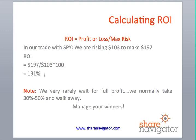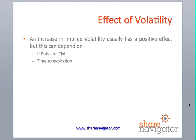We very rarely wait for full profit or let these trades run to expiry. We normally book profit at maybe 25, 30, 40, or up to 50 percent, then walk away. Remember: if you manage your winners, you'll never go broke.